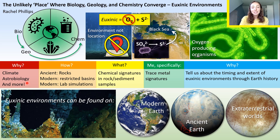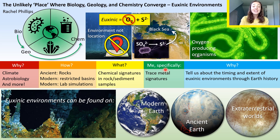So we've established that this research is important, but how do we study these environments? And what is it that I'm looking for when I analyze the chemistry of these rocks or lab-synthesized precipitates? I look for trace metal signatures, because the amount and type of trace metals in a particular rock can tell us whether that rock formed in a euxinic environment or not. And if we do this with enough rocks from enough locations and enough times throughout Earth's history, we can create a pretty clear picture of how euxinic environments have evolved on our planet.